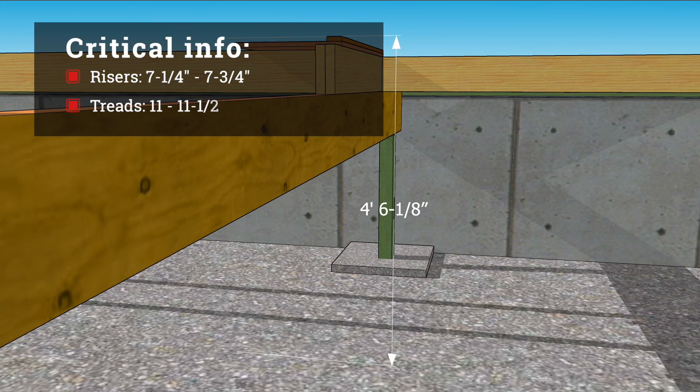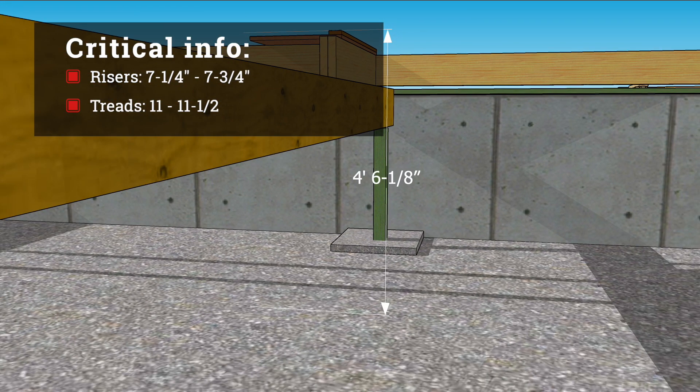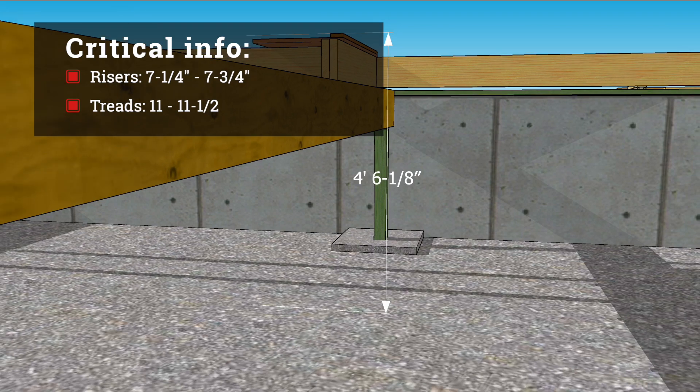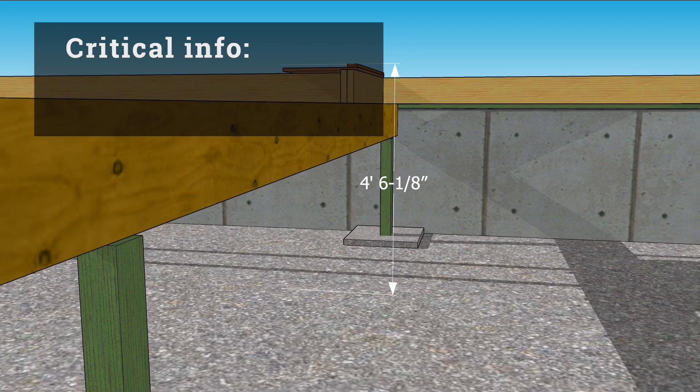According to the building code, risers should be between seven and a quarter inches and seven and three-quarter inches. Treads should be between eleven and eleven and a half inches.